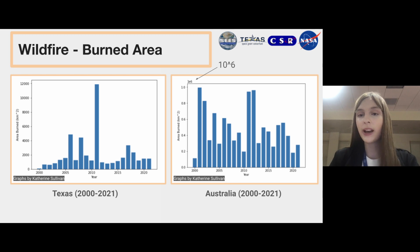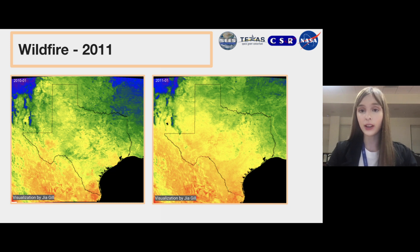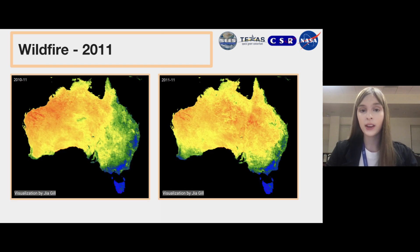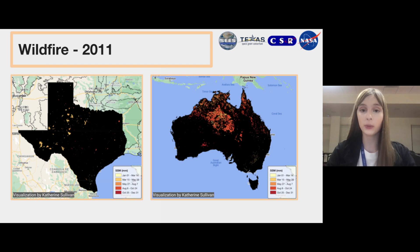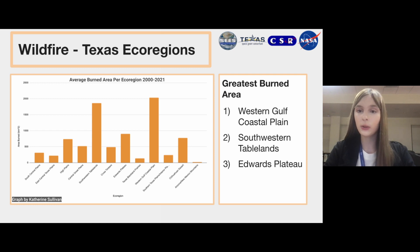Next, we have a graph of total burned area over time, which allows us to see the burn data for specific years. One thing that was immediately apparent was that 2011 had an especially bad wildfire season in both locations, consistent with the record land surface temperatures recorded for that year. Looking at the drought maps for 2010 and 2011, you can see the increase in drought levels that occurred in central Texas, and for Australia, drought extended much further east over the course of that year. The burned area maps show a much greater burned area than those from adjacent years. Texas was hit hard from the beginning of the year, while Australia's wildfire season intensified in September. Apart from observing overall changes in burned area, we also wanted to know which parts of Texas and Australia had been most affected by wildfire over the last 20 years. We split the territories into ecoregions and calculated the average number of square kilometers burned in each ecoregion between 2000 and 2021.